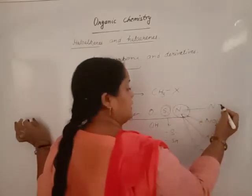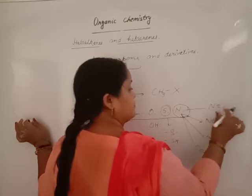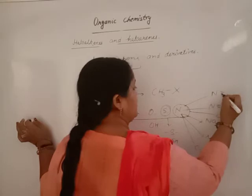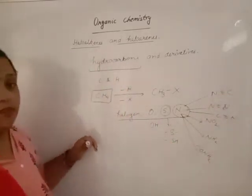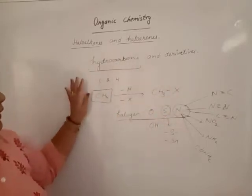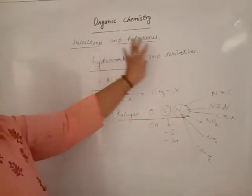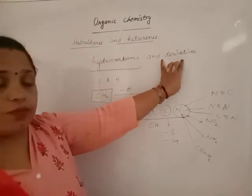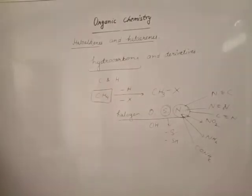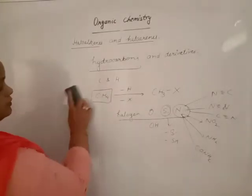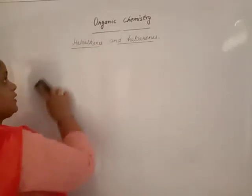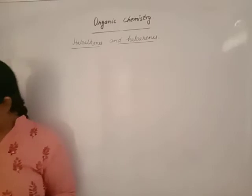Nitrogen may also exist as azide, cyano, or isocyano groups. The whole branch of chemistry consisting of hydrocarbons as well as their derivatives is included under the heading of organic chemistry. In our syllabus, organic chemistry consists of four subunits.